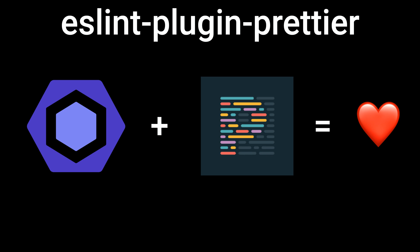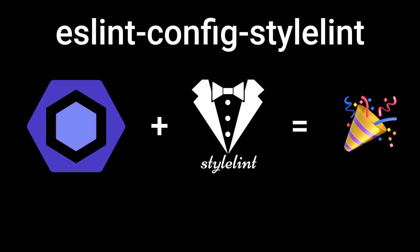ESLint Plugin Prettier — if you are using Prettier as a default code formatter in your project, you should definitely use this plugin. It works best if you disable all other ESLint rules relating to code formatting and only enable rules that detect potential bugs.